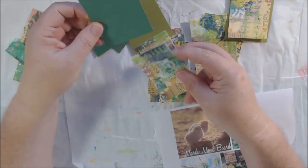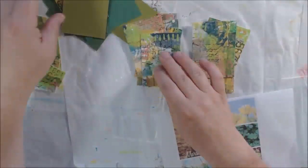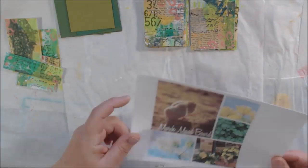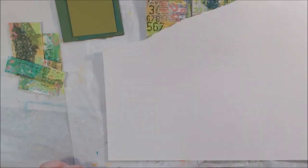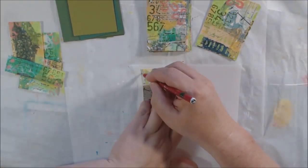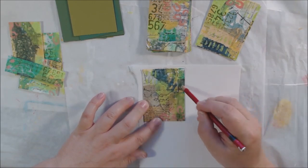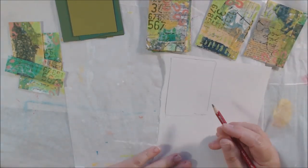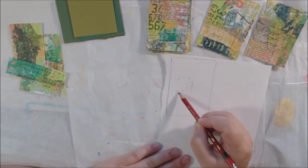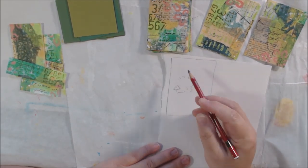I also added some white splatter using some white India ink, and then I cut up the master board. I cut pieces that were two and a quarter by three and a quarter so that I could mount them on backgrounds, and then I cut a few that were actual ATC size, which is two and a half by three and a half, so those won't go on backgrounds unless I trim them down.